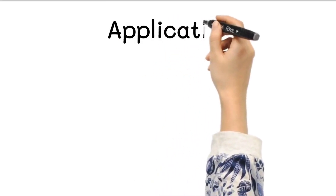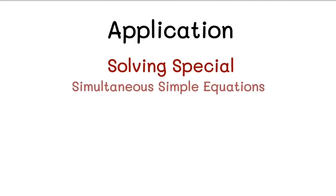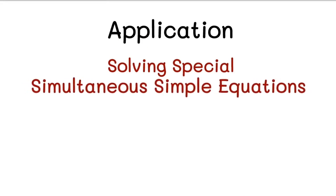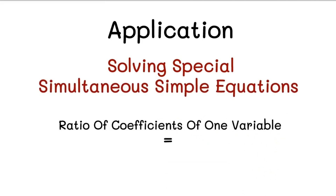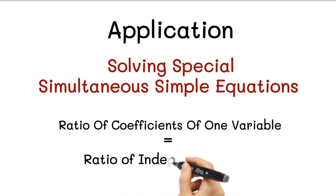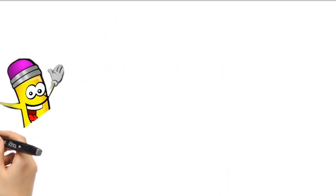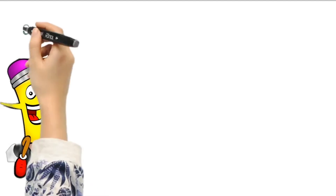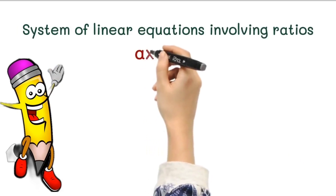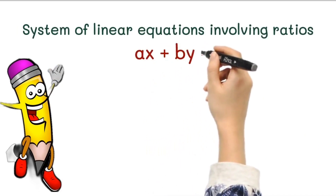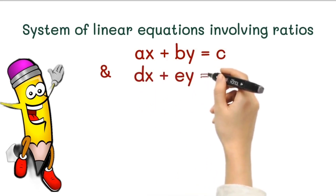Application of Vedic math sutra 6: solving a special type of simultaneous simple equations in which the ratio of coefficients of one variable is the same as the ratio of the independent terms of the equations. Let's start with an example. Consider the system of linear equations involving ratios — suppose we have the equations ax plus by equals c and dx plus ey equals f.